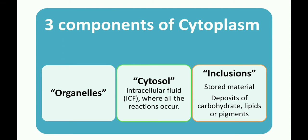Now we will see the three different components of the cytoplasm. The first one is the organelles. These are membrane-enclosed little organs or compartments performing specific functions, and these are present only in eukaryotic cells and are completely absent in prokaryotic cells such as bacteria. Examples of organelles include mitochondria, chloroplast, Golgi bodies, endoplasmic reticulum, lysosomes, spherosomes, nucleus, etc.